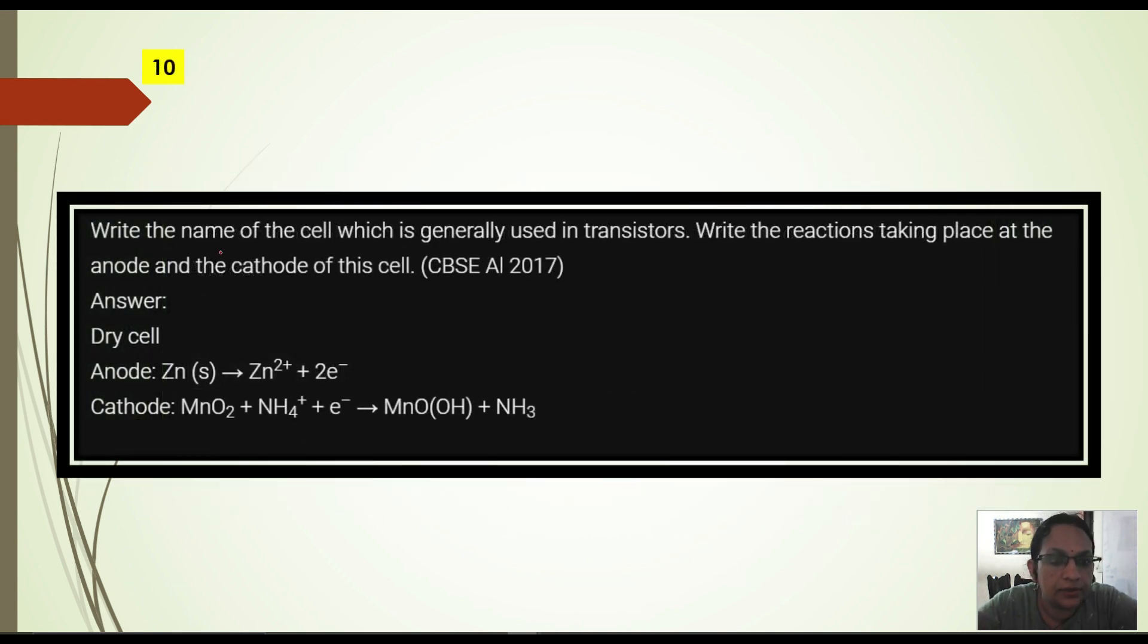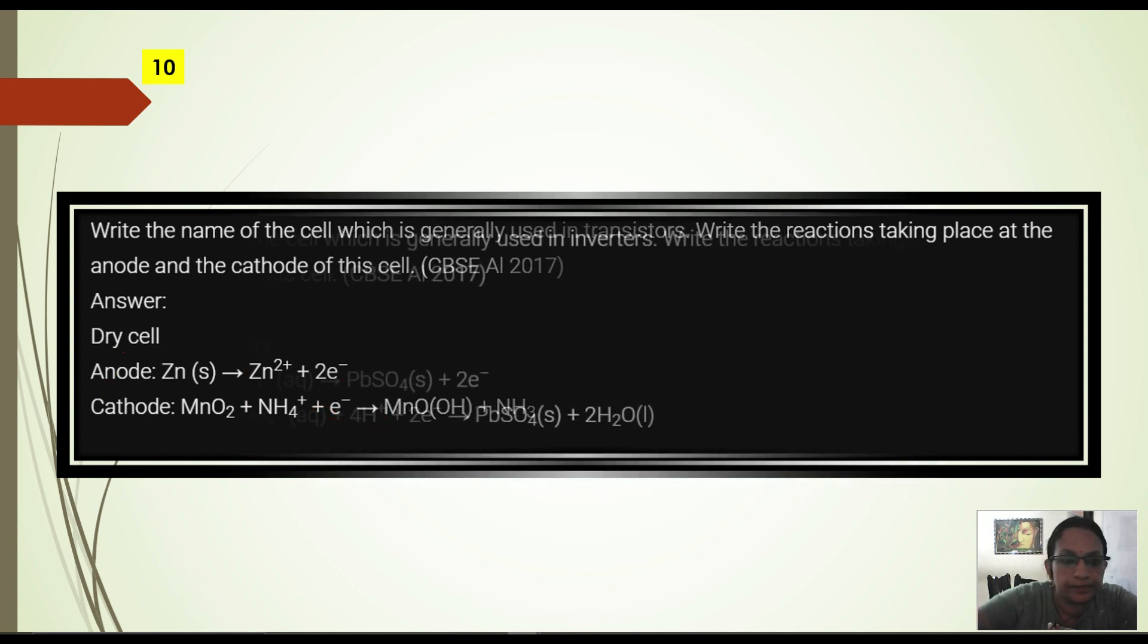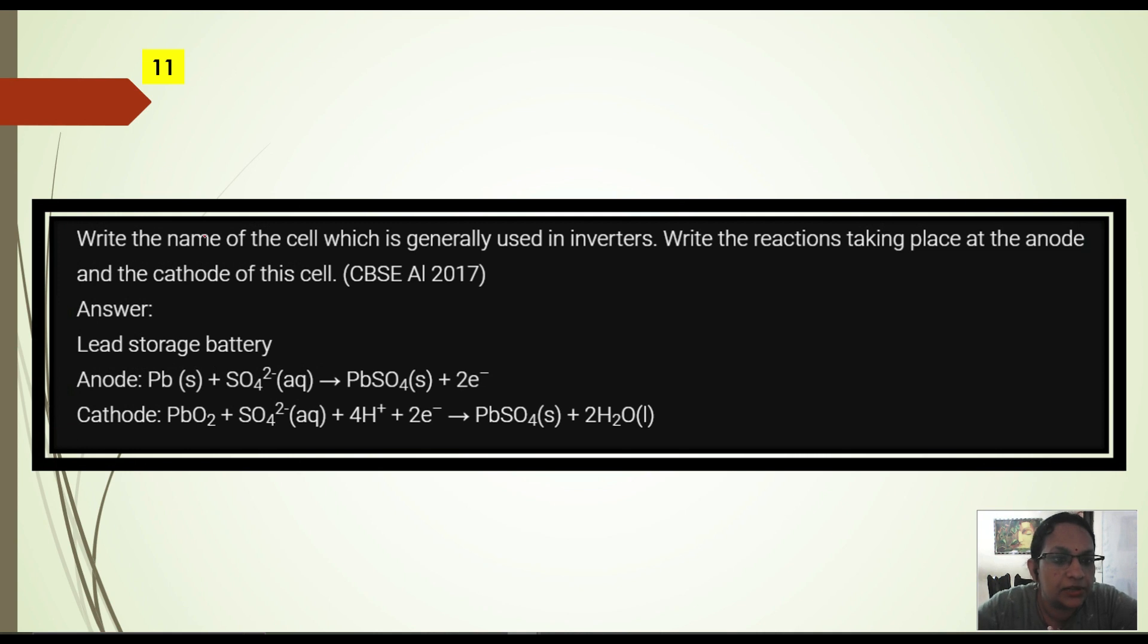Next question. Write the name of the cell which is generally used in transistors. In transistor we use dry cell. And if you have to write anode cathode reaction, at anode zinc gets converted into zinc ion and 2 electrons are released. At cathode MnO2 plus ammonium ion plus electron forms MnO2H and ammonia.